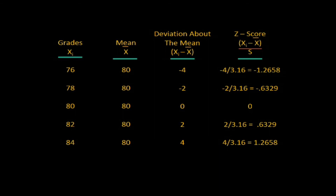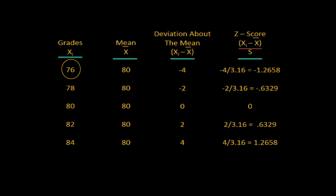To review: column one has the x sub i's — the original five grades. Column two has x-bar, which is 80. Column three has the deviations about the mean, so 76 minus 80 is minus 4, and so on. In the fourth column, we take the numerator x sub i minus x-bar and divide by s, which is 3.16, the sample standard deviation. This gives us all of the z-scores. So when the grade on the exam is 76, the z-score for that would be minus 1.2658, and so on.